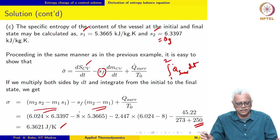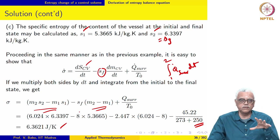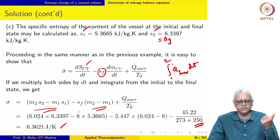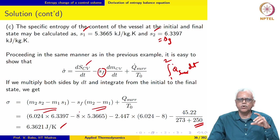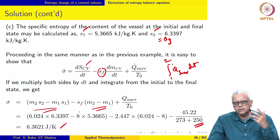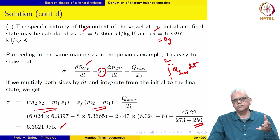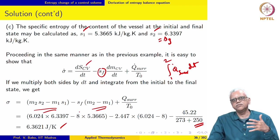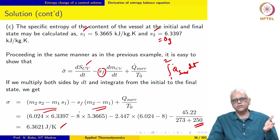External irreversibility due to heat transfer across a finite temperature difference is an important source of entropy generation during this process. The other source is the unsteady nature of the flow itself — a certain amount of entropy leaves the control volume with the escaping mass, leading to an increase in the entropy of the universe from these two effects.